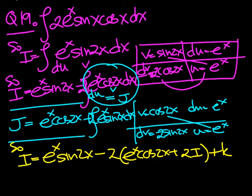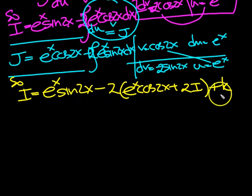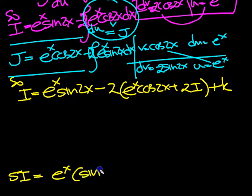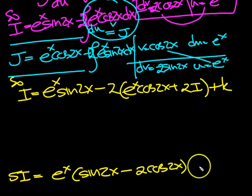Right, so let's just tidy them up and move things around. So we're going to have the minus 2 times plus 2 is minus 4i. So I'm going to move that over there to be with the i to make 5i. The e to the x I'm going to keep outside the bracket. And inside the bracket would be sine 2x. And the second one would be minus 2 cos 2x. Plus our k.